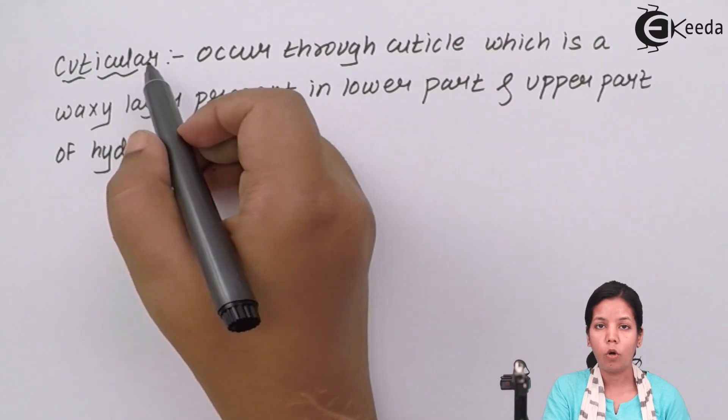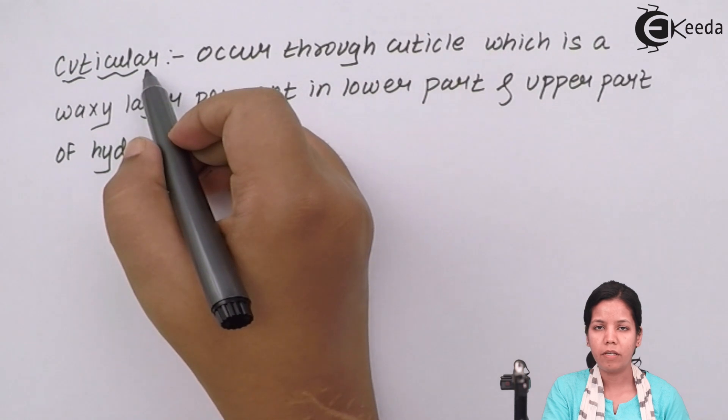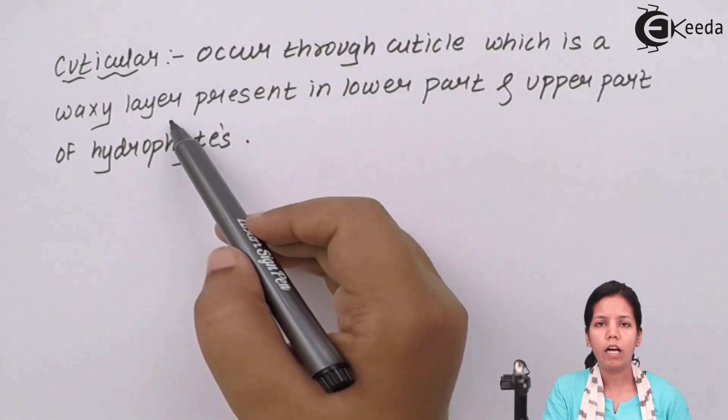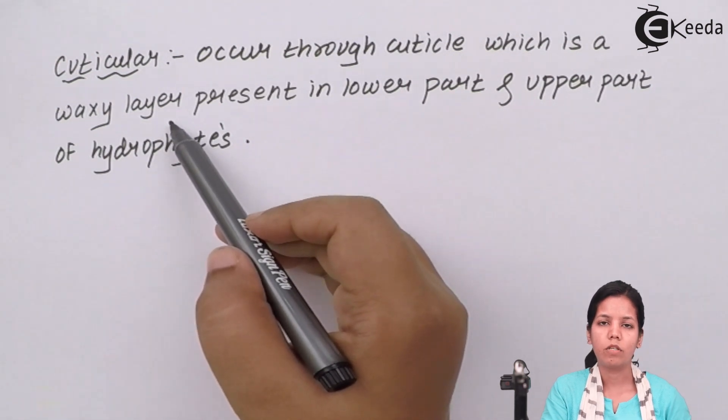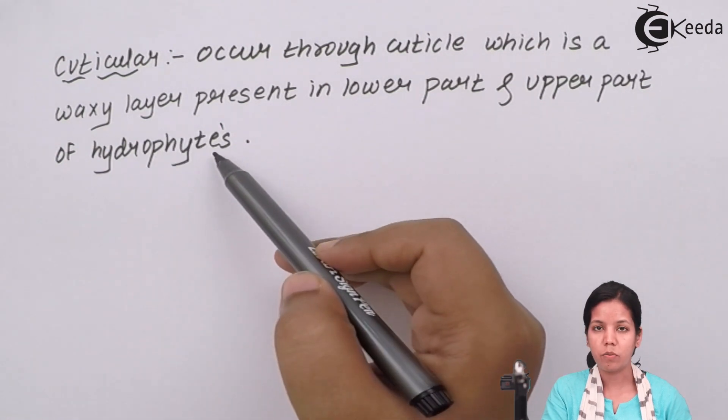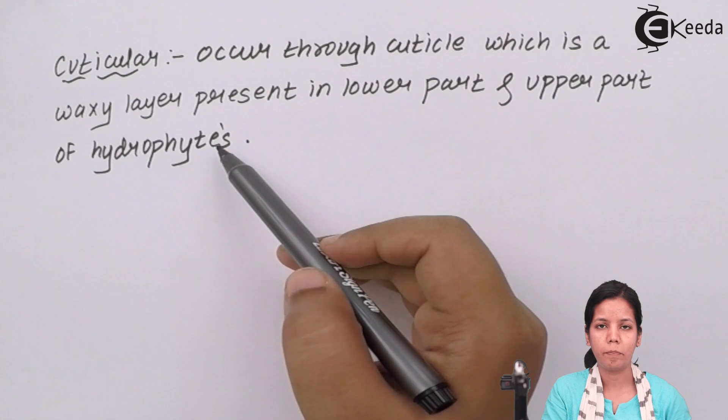The third type of transpiration is cuticular transpiration. In this type, basically a waxy coating that is present on the upper and lower surfaces of leaf helps in the process of transpiration. This type of transpiration basically takes place inside hydrophytes. When I say hydrophytes, it means plants which are completely grown or immersed in water. For example, lotus is a hydrophyte.